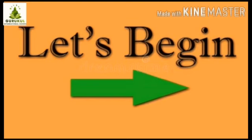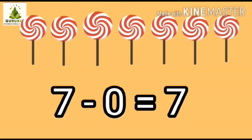Let's begin with one example. Here are seven lollipops. Let us count: 1, 2, 3, 4, 5, 6, 7 — seven lollipops. Seven minus zero is equal to seven. Zero means nothing has to be crossed out or taken away, so the number does not change and the answer remains the same.